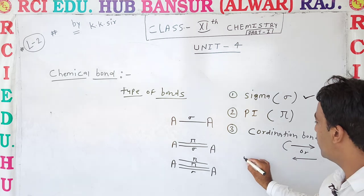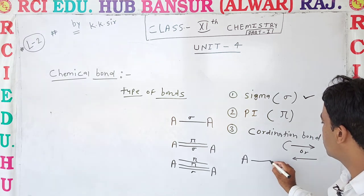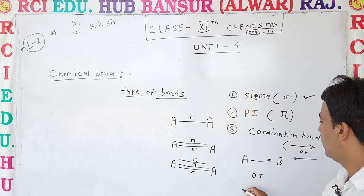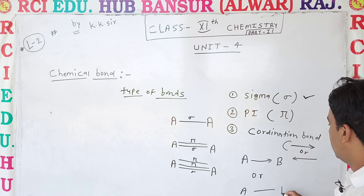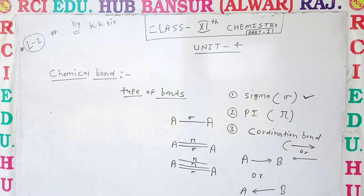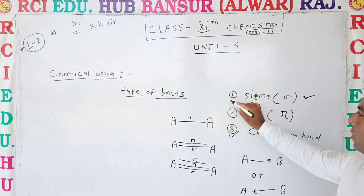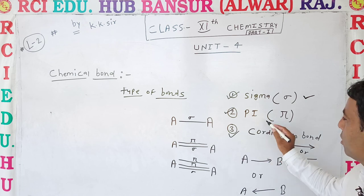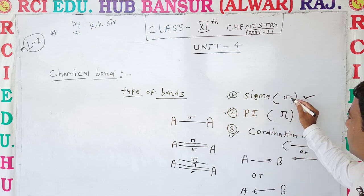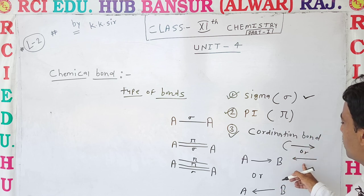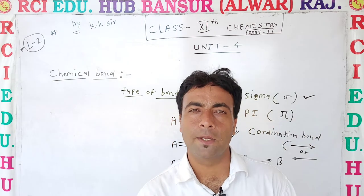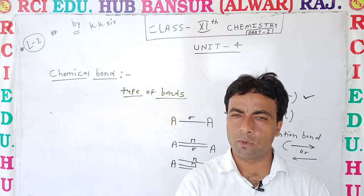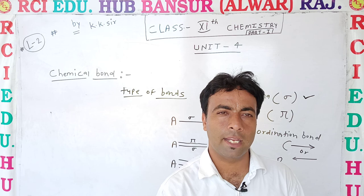A coordination bond between two atoms A and B can be represented as A → B or A ← B — it is represented by a one-directional arrow. The first bond formed is a sigma bond, the second bond on top of sigma is a pi bond, and the coordination bond is represented by an arrow sign. Next class, we will see each theory one by one that explains the formation of bonds. Thank you.